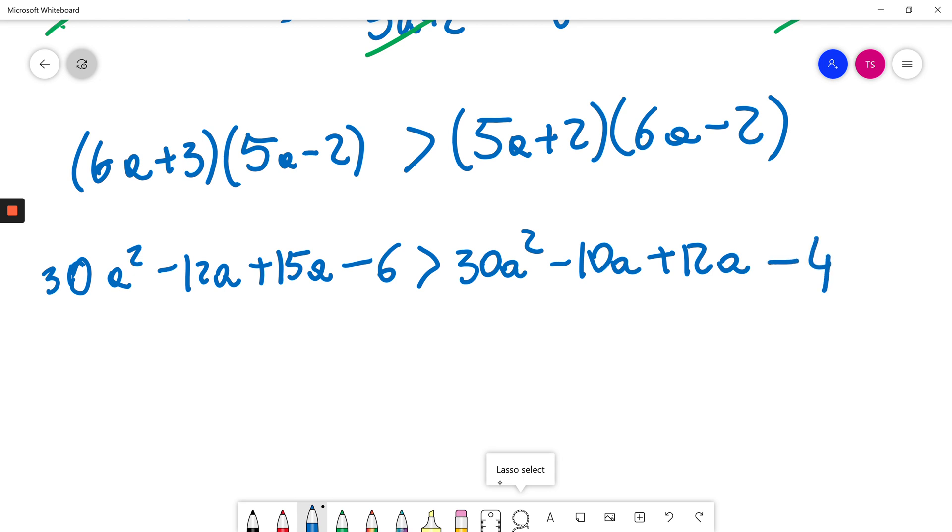Now I have 30A squared on both sides. I will subtract 30A squared from both sides.